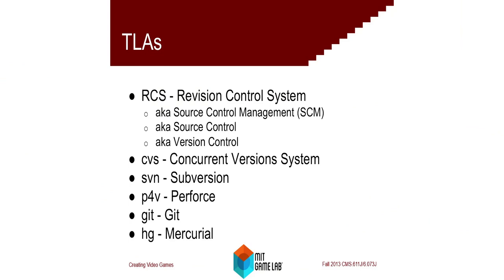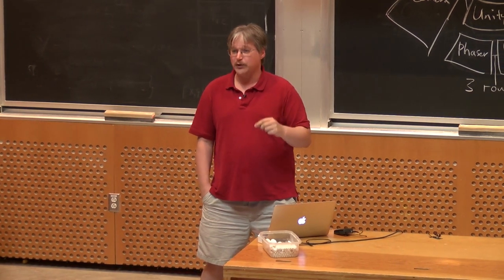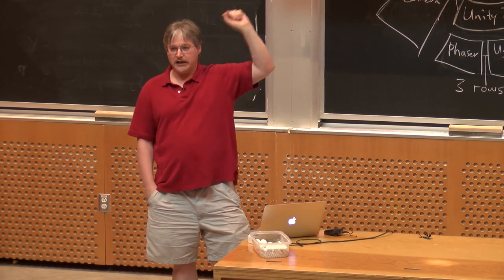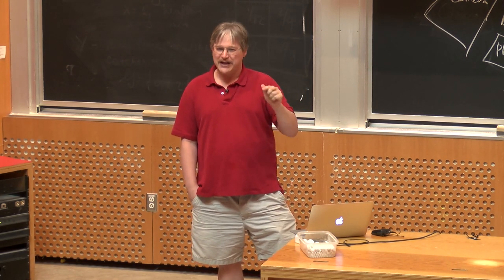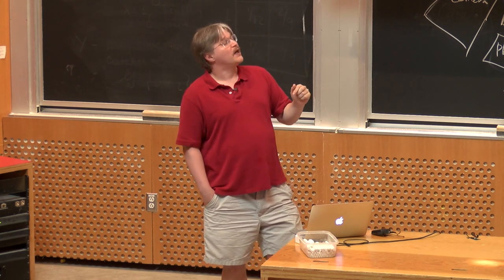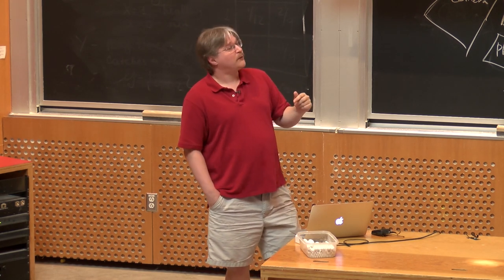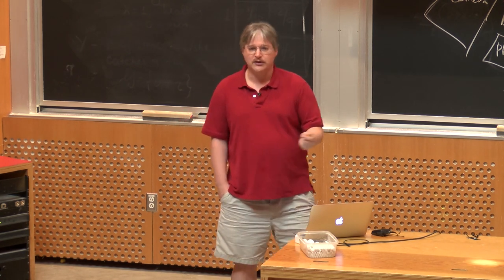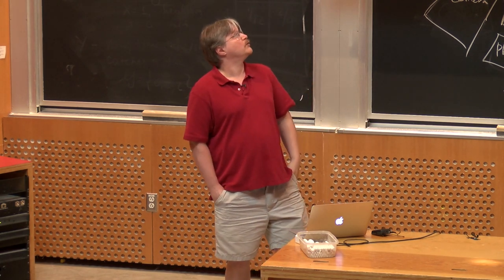There are a bunch of words that go along with this topic. Revision Control System (RCS) is often used as a generic term, though it's also a specific old piece of software. Source control, version control, and SCM (source control management) are common terms. CVS (concurrent version system) is older but still seen. SVN is a more recent open source version. Perforce is used often in the games industry. Git and Mercurial are distributed source control systems — their interface is similar to all the above.